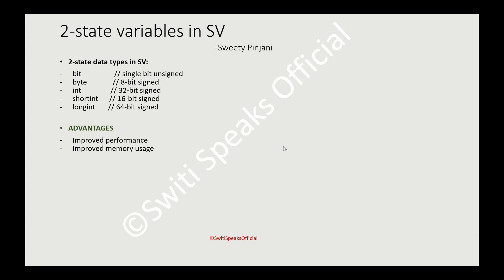While using two-state variables, we need to take some caution. The first scenario is: what will happen if you use two-state variables in randomization? One thing to be careful about is that all two-state variables are signed, which means if you use them in randomization, they can take negative values. For example, if you define a 'byte', instead of taking values 0 to 255, it can take values from minus 128 to 127.